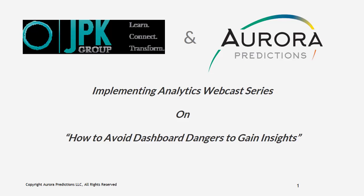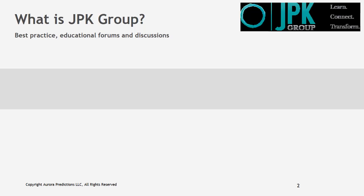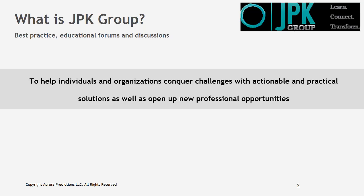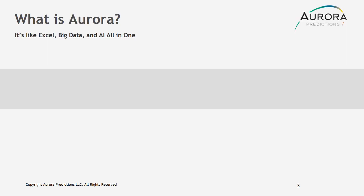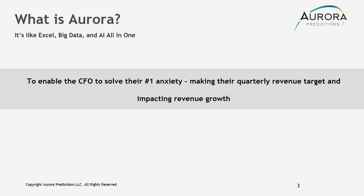Welcome to the Implementing Analytics Webcast Series, this one on how to avoid dashboard dangers to gain insights, brought to you by the JPK Group and Aurora Predictions. JPK provides best practice educational forums and discussions to help individuals and organizations conquer challenges with actionable and practical solutions, as well as open up new professional opportunities. Aurora is like Excel, Big Data, and artificial intelligence all in one, enabling CFOs to solve their number one anxiety: making their quarterly revenue target and impacting growth.